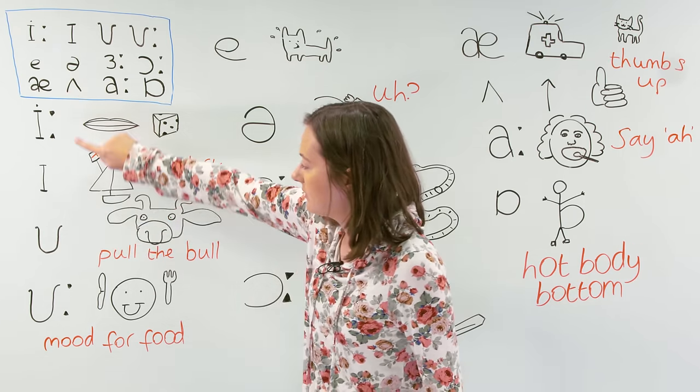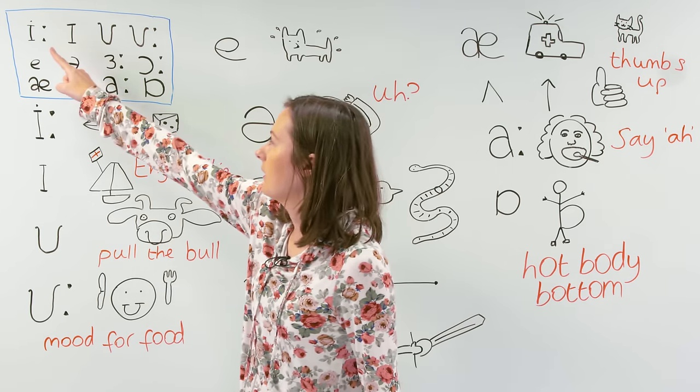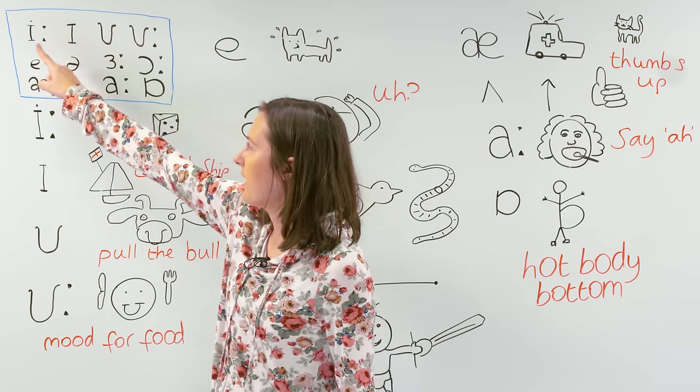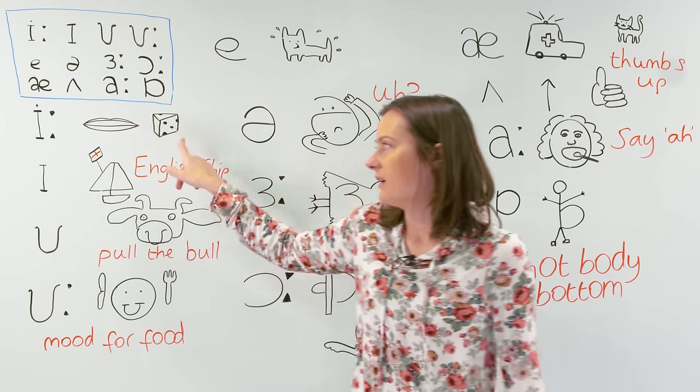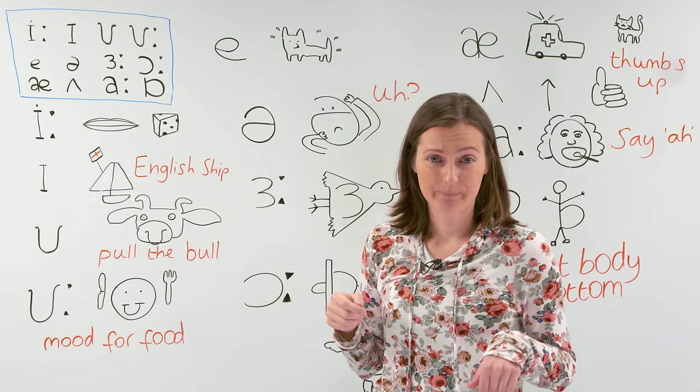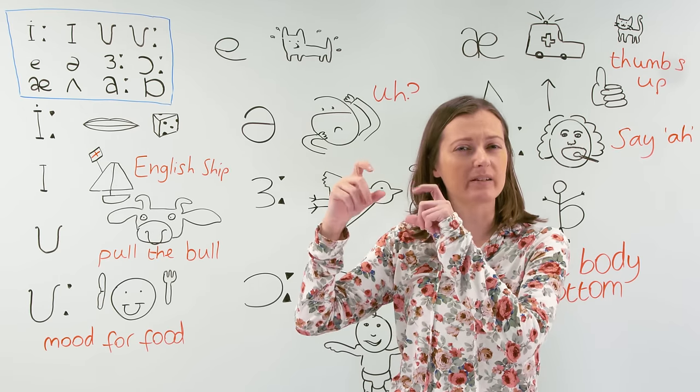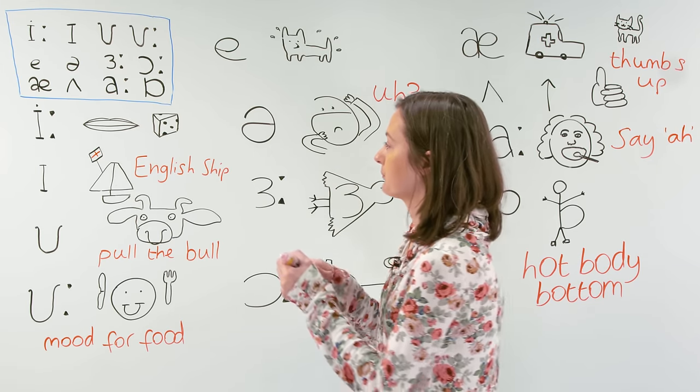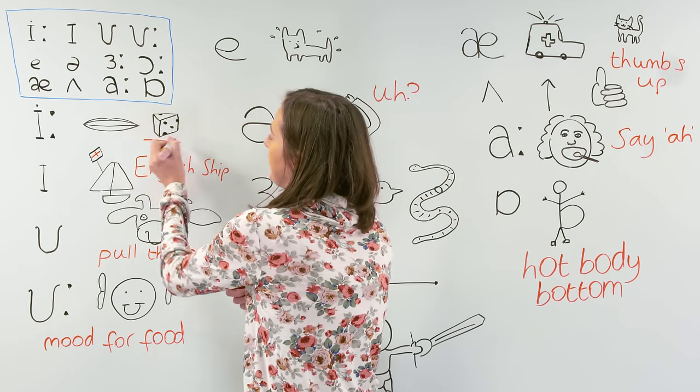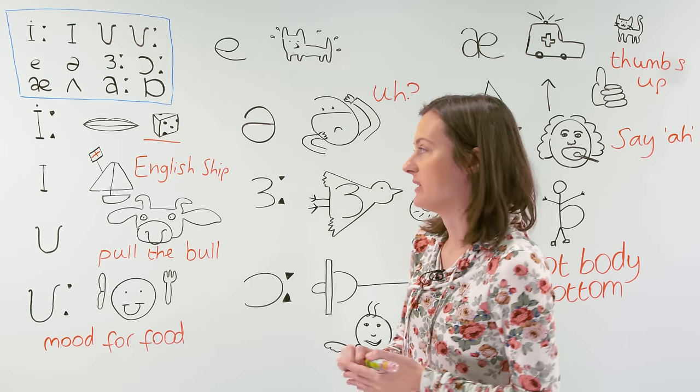We're going to start here, and this first column, we go across the vowel chart. E - say cheese. You know when somebody takes a picture? Cheese. The word cheese has the sound in it.